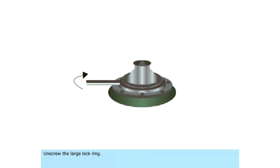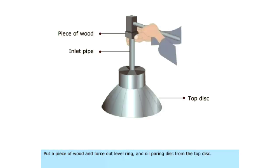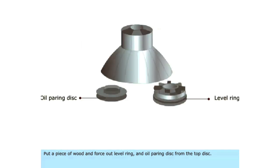Unscrew the large lock ring. Lift out the bowl hood by special lifting tool. Put a piece of wood and force out level ring and oil pairing disc from the top disc.